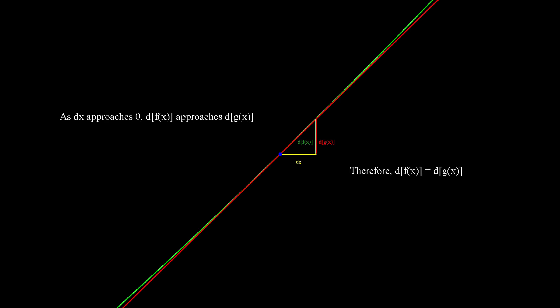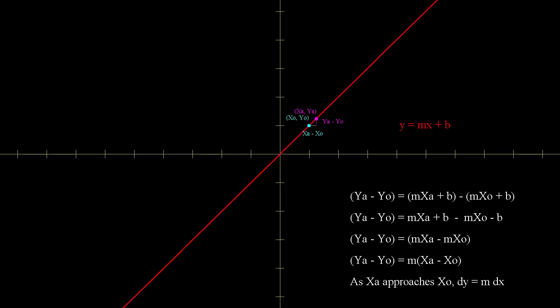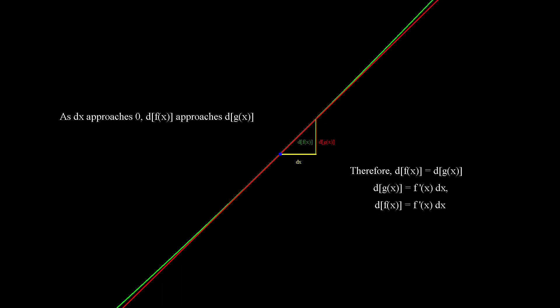Here, we can say that df of x is equal to dg of x. As we discussed previously, a tiny change in a line dy will equal its slope times dx. Therefore, in our case dg of x will equal f prime dx. And since df of x is equal to dg of x, df of x will equal f prime dx also.